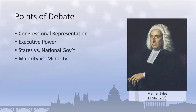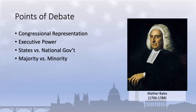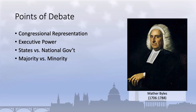The debate over how to protect the rights of the minority in the context of a democratic political system was of great concern to the Founders, perhaps captured most clearly by Mather Byles's lamentation: "Which is better, to be ruled by one tyrant three thousand miles away, or three thousand tyrants one mile away?" This question reflected the Founders' ambivalence towards pure forms of democracy. The delegates believed that democracy must be responsive to the will of the majority, but also that the rights of minorities and individuals—most especially the right to property—must be protected from the potential tyranny of the majority.